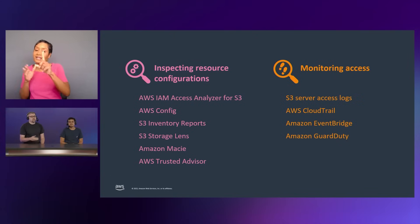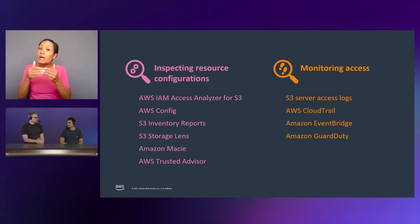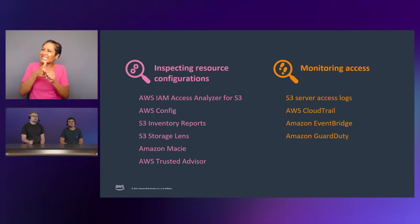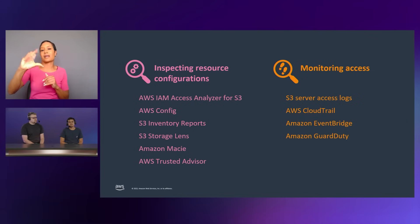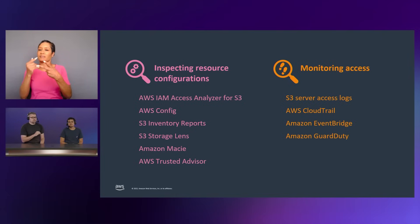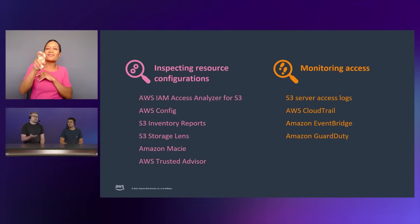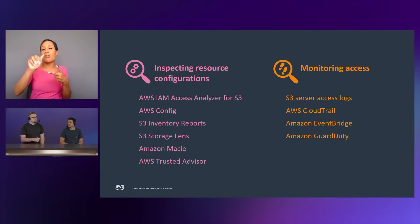You also need to monitor what actually happens. If you want to make sure that nothing has been accessed that shouldn't have been, you want to monitor access. Your primary options are S3 Server Access Logs and AWS CloudTrail. CloudTrail is the preferred option, and it feeds into our event system — Amazon EventBridge and Amazon GuardDuty piggyback on the same stream of events.